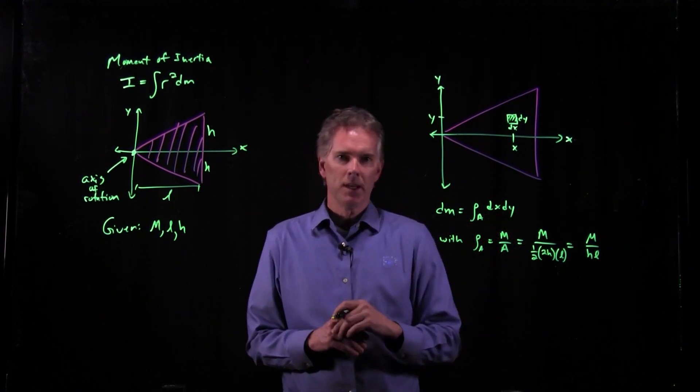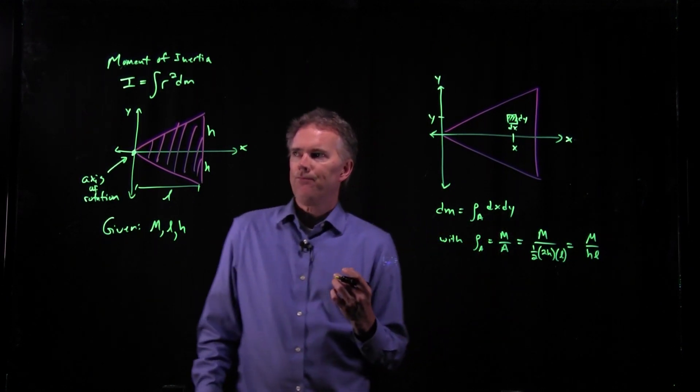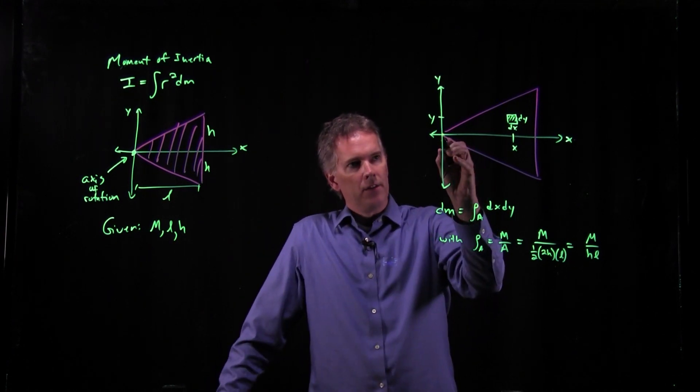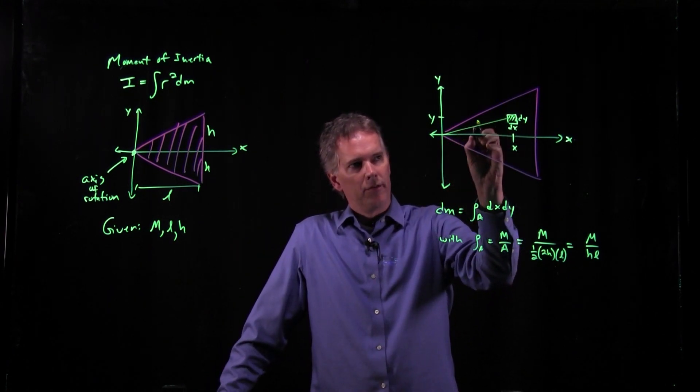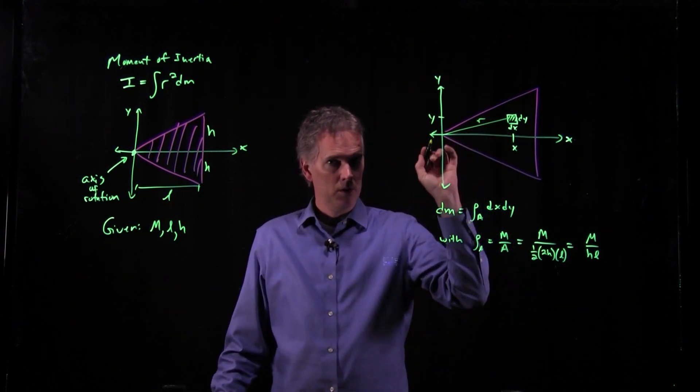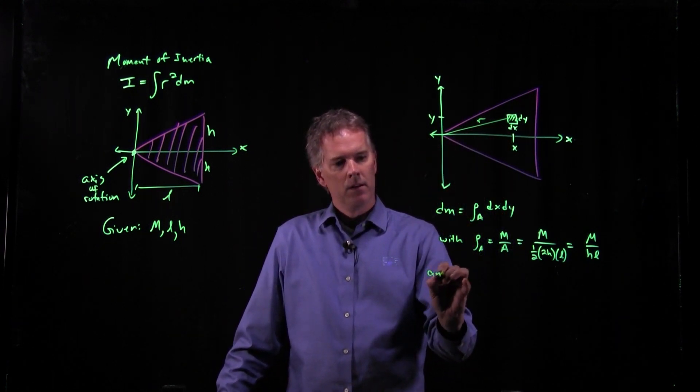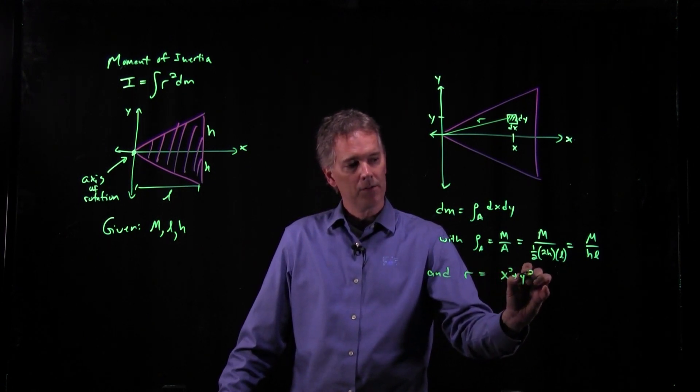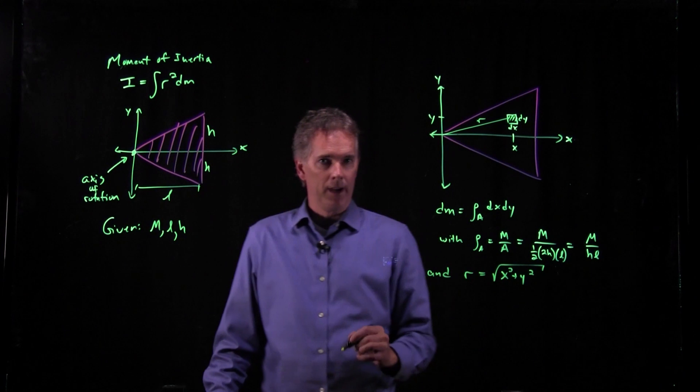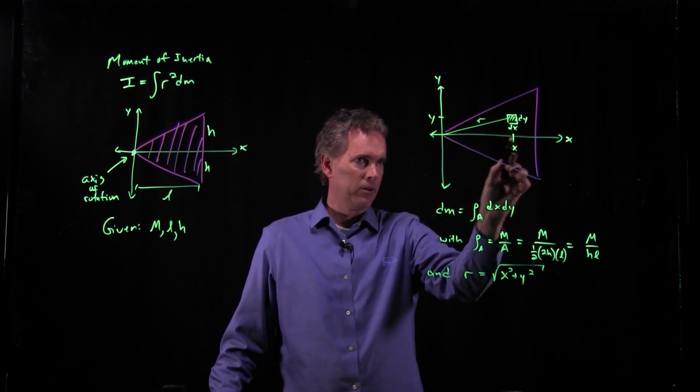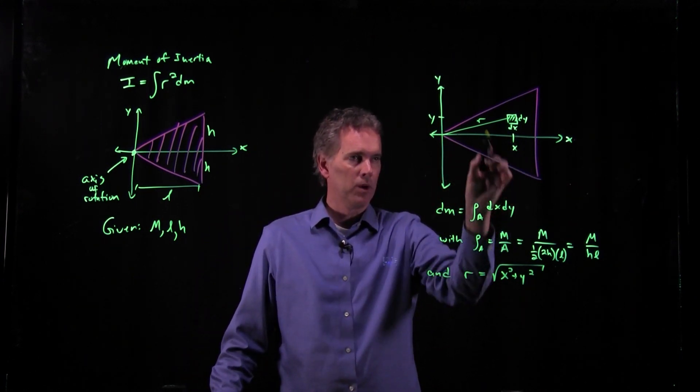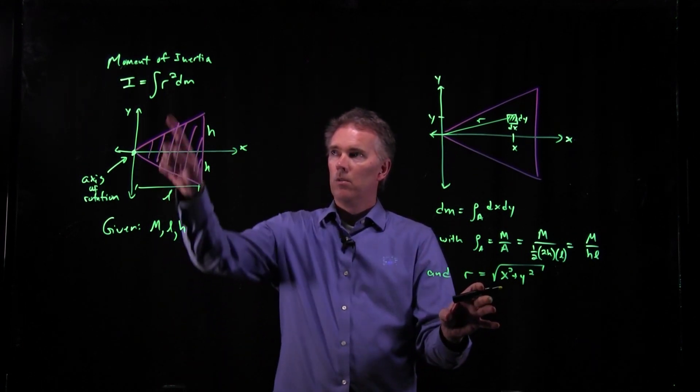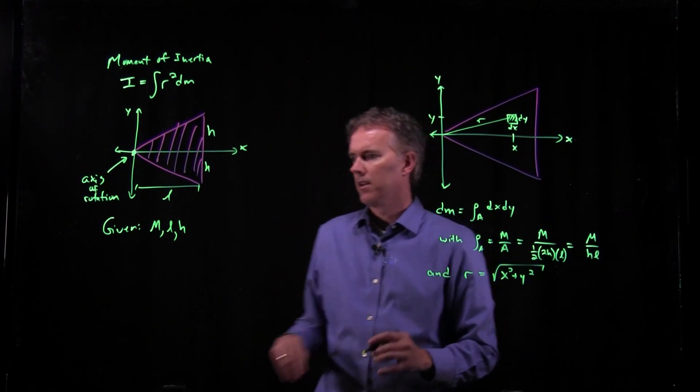So we have our dm. We would have these numbers here. We would know rho. And now we know what dm is in terms of x and y. But what about this r²? r is the distance from the axis of rotation to dm. So r here is going to be x² plus y², all of that square rooted. Little Pythagorean theorem right there. So that looks like we know everything we need to know.